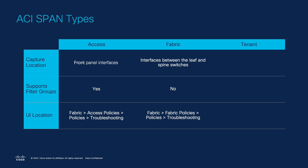Fabric SPAN is used to capture traffic flowing between the leaf and spine switches within the fabric, so you use this to verify if the flow is working within ACI itself. Filter groups are not supported here, and configuration is done under Fabric > Fabric Policies > Policies > Troubleshooting.